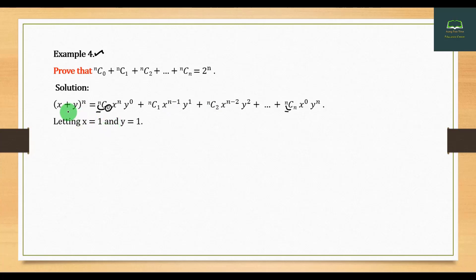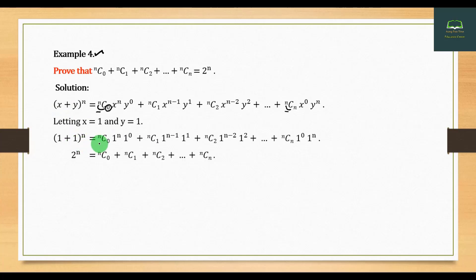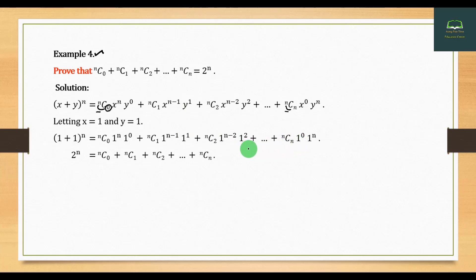So we have on the left side 1 plus 2 to the power n, 1 to the power 0, then there is nC0. And h1 to the power 1, 1 to the power 0. If we are pushing the output, 1 to the power minus 1, 1 to the power 0. So if we are using nC0 and h1 to the power 0.